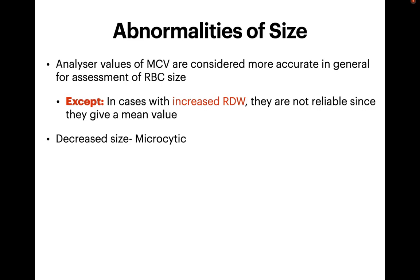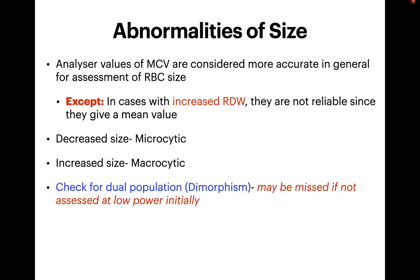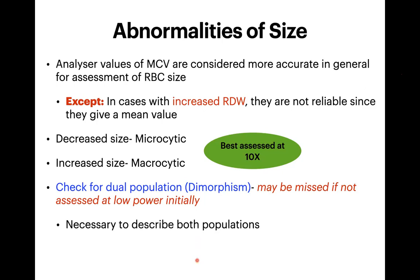Decreased size is called microcytosis and increased size is called macrocytosis. When looking for size abnormalities, check for a dual population — dimorphism — which may be missed if not assessed at low power initially. Always assess the size of RBCs at 10x, since you are seeing many more cells than at 40x, allowing better evaluation of the predominant size.